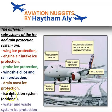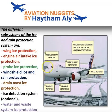For ice detection, there is a basic ice detection system and an optional ice detection system. The basic system relies on a visual indicator probe located between the captain and first officer windshields. If the crew sees ice build-up on this visual indicator probe, they know they are flying in icing conditions and should activate wing anti-ice, engine anti-ice, or both.